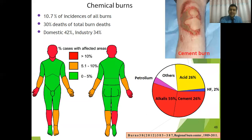There is basically no difference in terms of gender regarding chemical burns on different parts of the body. More than 10% of burns, both in males and females, involve the head, hand, and right thigh. 5.1% to 10% of chemical burns involve the arms and legs of males and females. 0% to 5% of burns involve all other parts of the body.